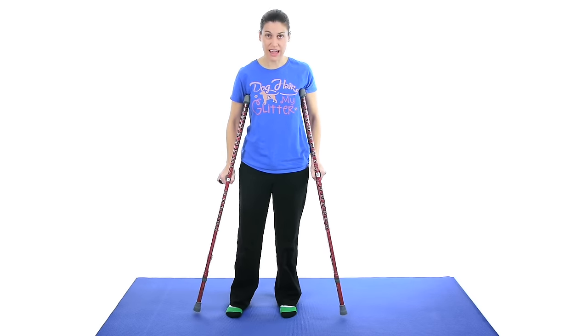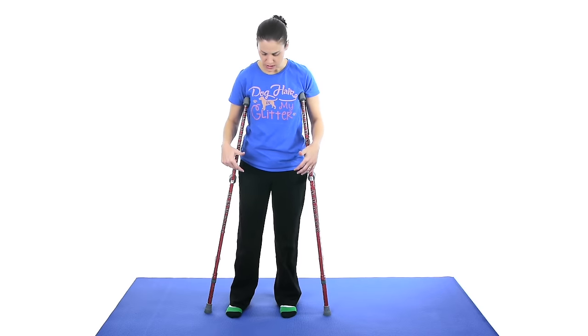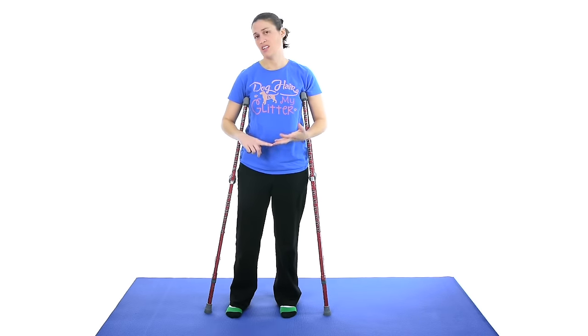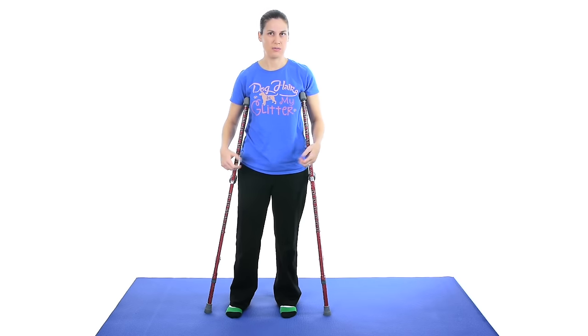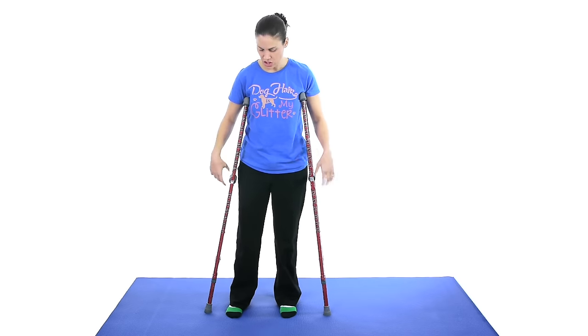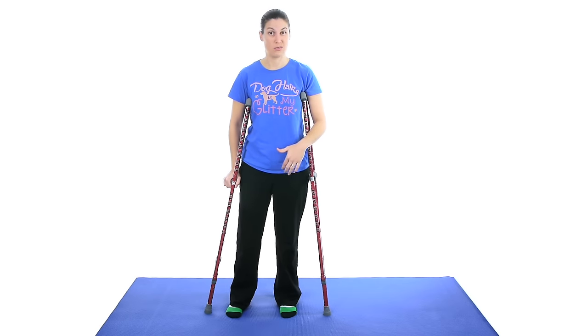So once you have all that in place, you get to the walking part, and there's different types of weight bearing for people when they're doing crutches. You're non-weight bearing, you can be toe touch weight bearing which is about 20% of your body weight. You can be partial weight bearing, and then weight bearing as tolerated where it's just kind of helping give you a little bit of balance. So the first one I'm going to show you is non-weight bearing, and then we'll kind of progress from there.